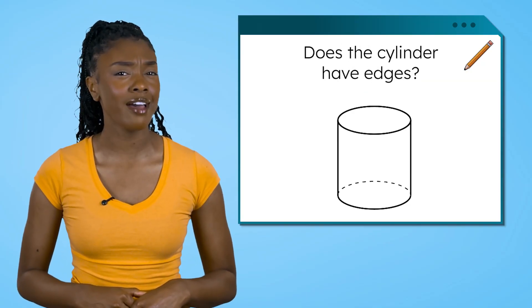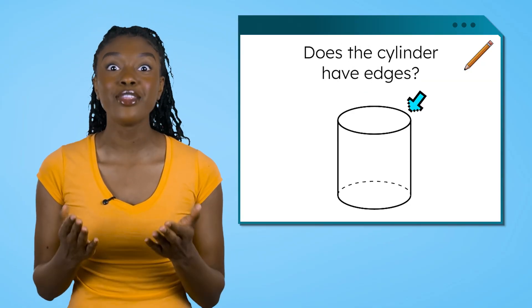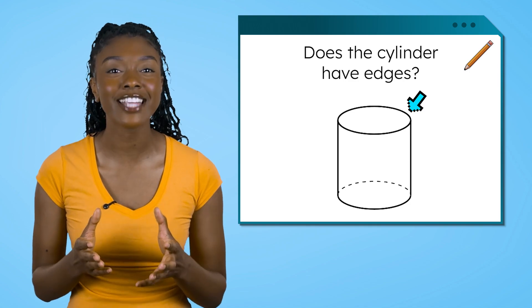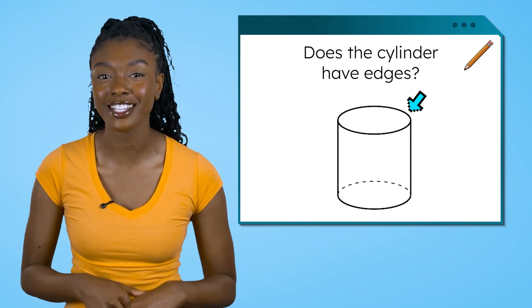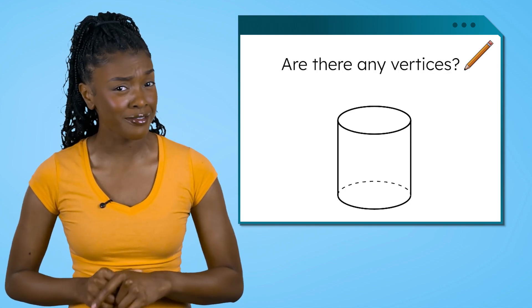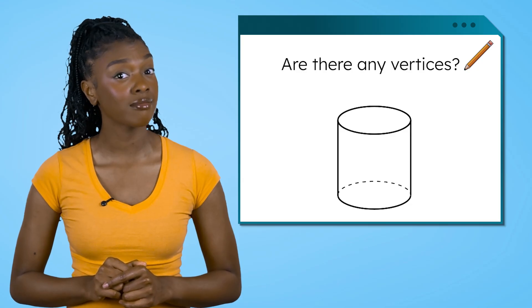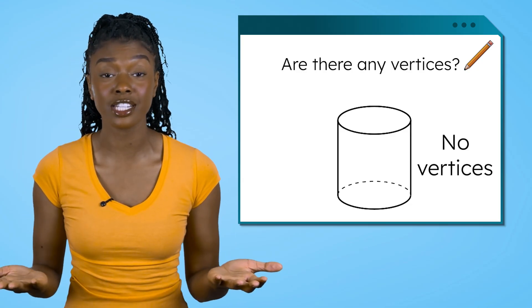Does the cylinder have edges? Yes. These two curved edges connect to the curved surface of the cylinder. Are there any vertices? No. There aren't any vertices on this shape.